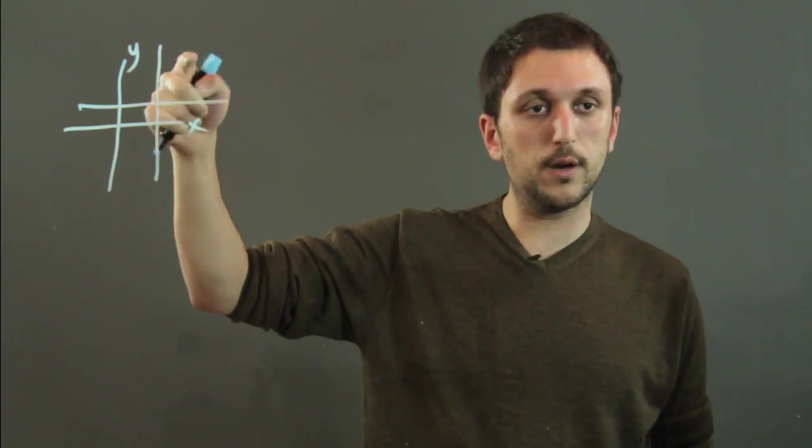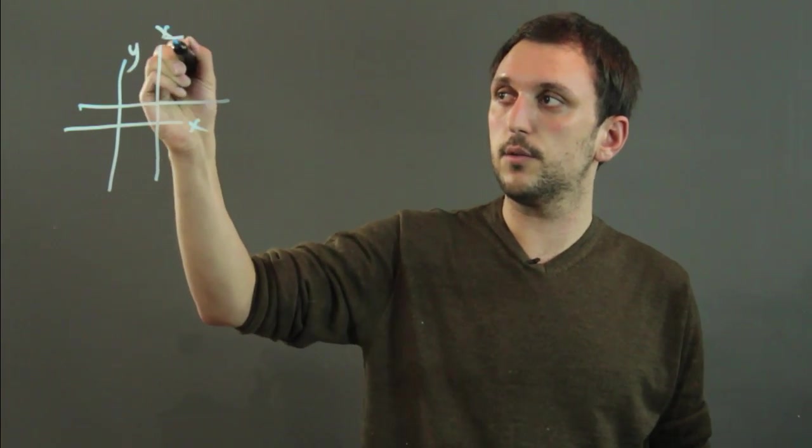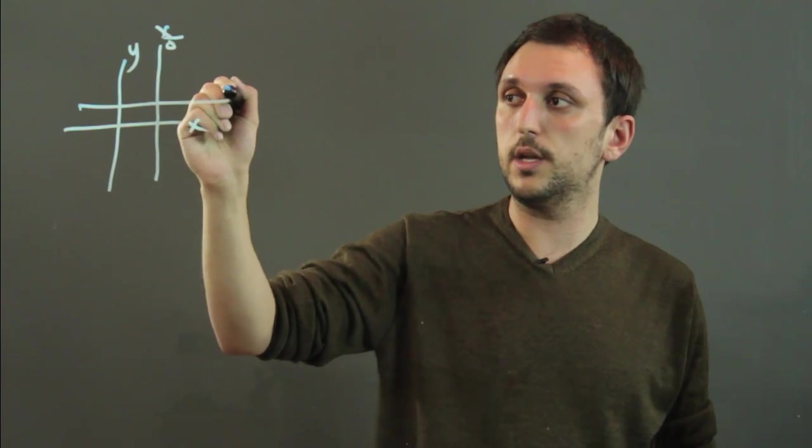So the change in y over the change in x is the slope formula, so this one is undefined, you call that x over 0, and this one is 0.